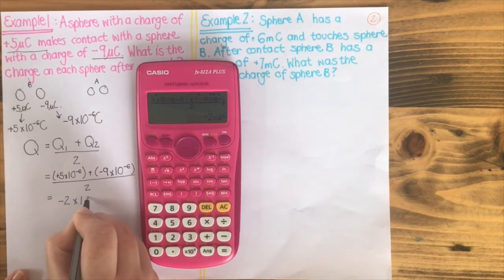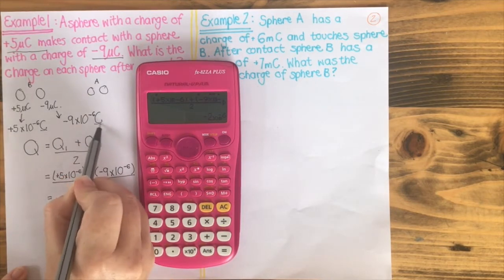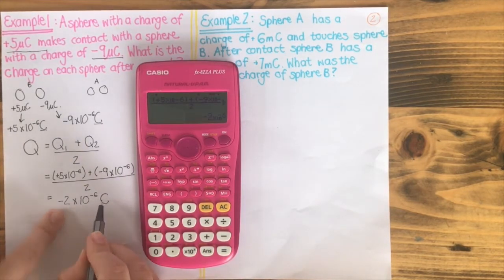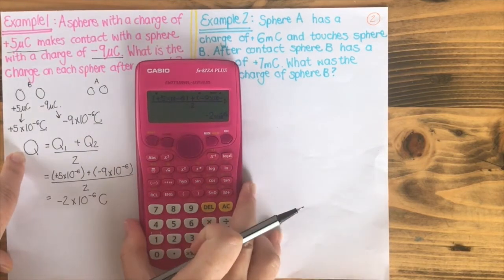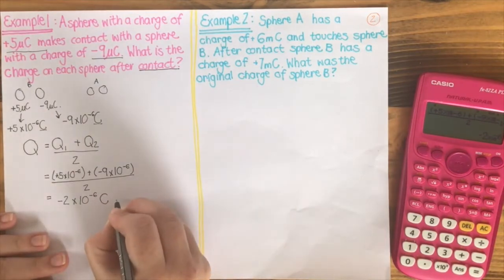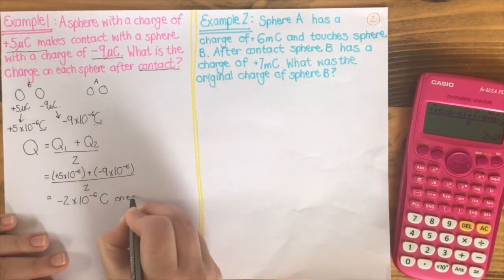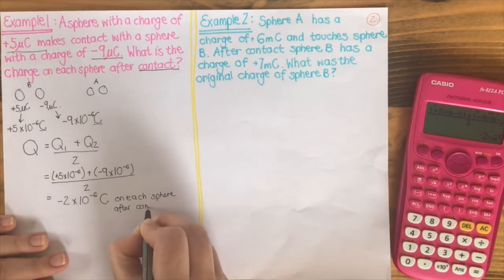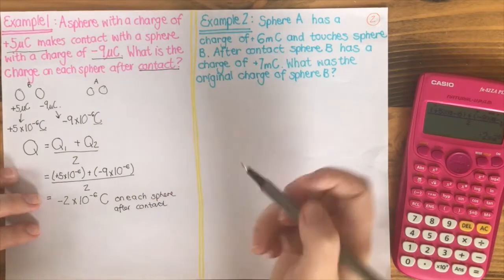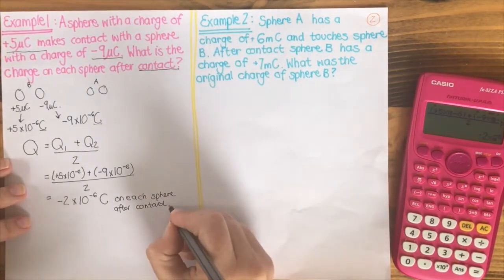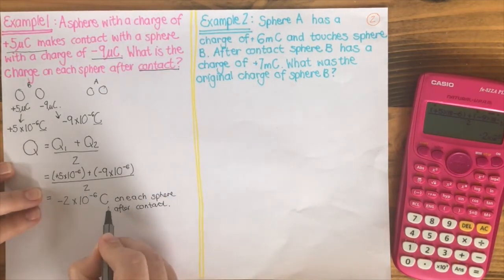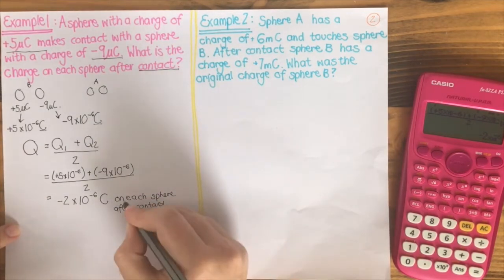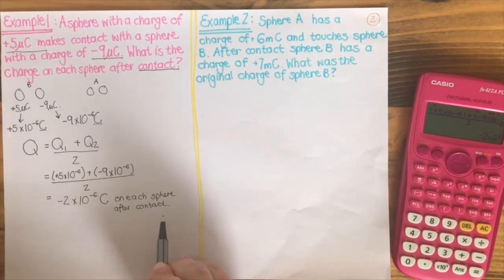The answer is minus 2 times 10 to the minus 6. We have converted them into coulombs, so this answer is coming out in coulombs. Minus 2 times 10 to the minus 6 coulombs on each sphere. You can write a little line there to explain your answer. Sometimes we don't have time for that exact practice in an exam, so this is the most important part of your answer. In other sections this does become very important, which is why I'm trying to train you to start with the explanation part now as well.